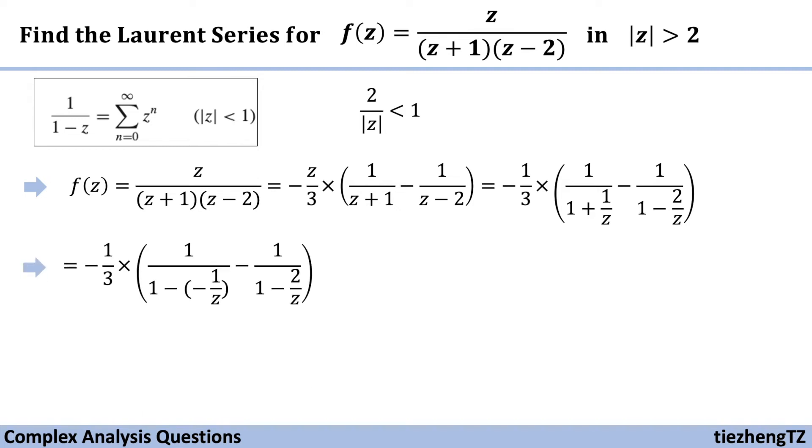Let's go a little step further. We can change 1 + 1/z into 1 - (-1/z). And since |2/z| < 1, we know the modulus of -1/z is also less than 1.